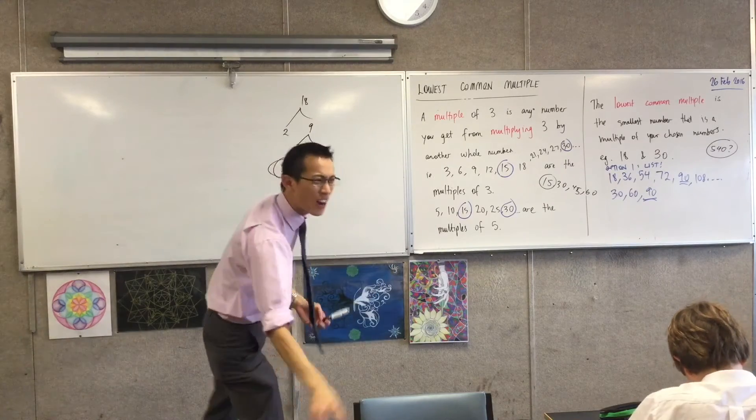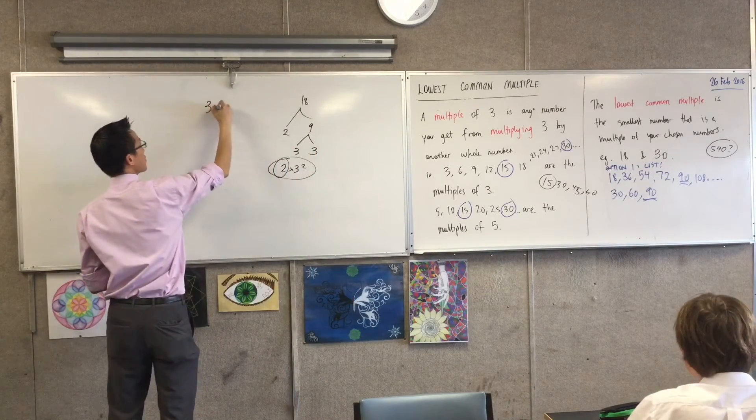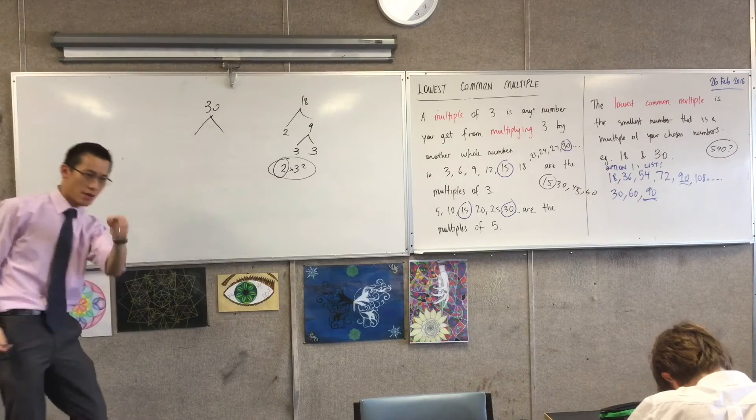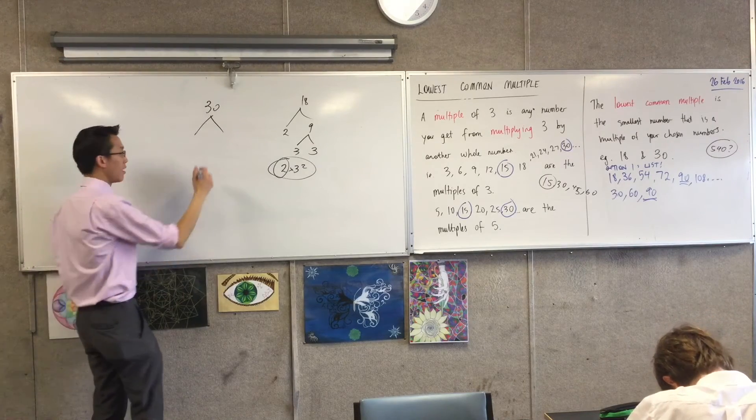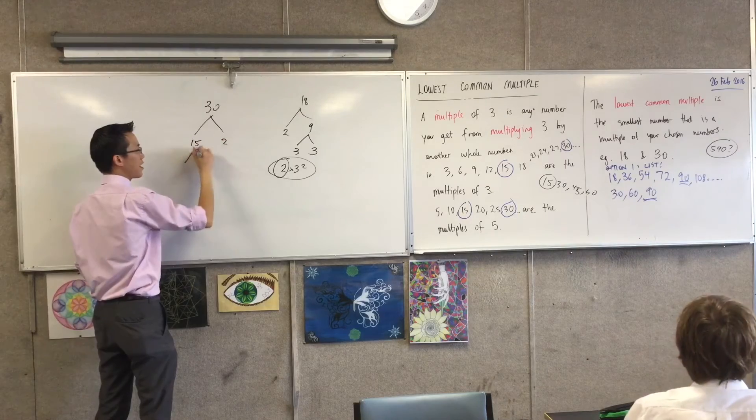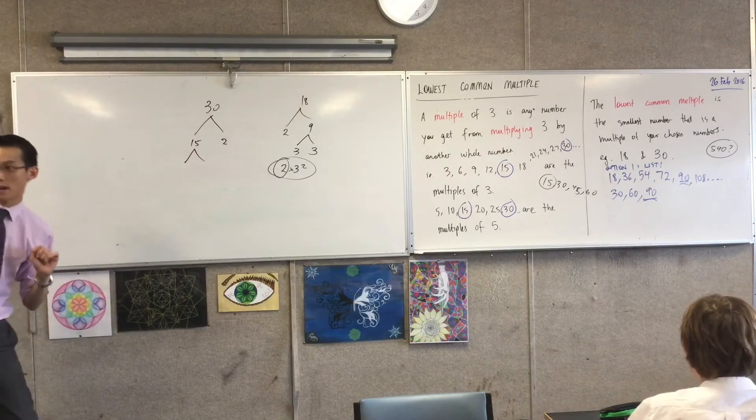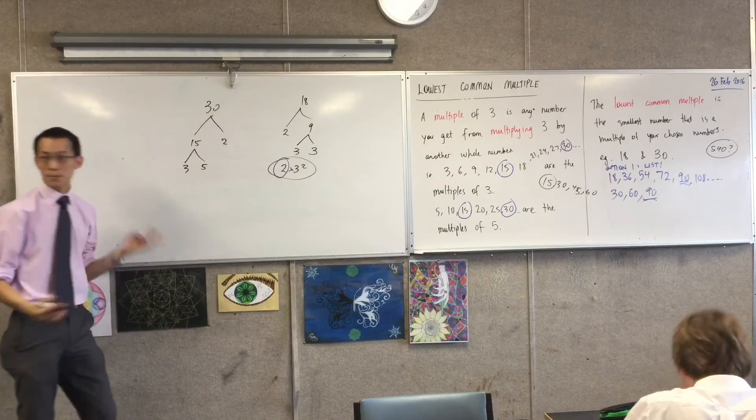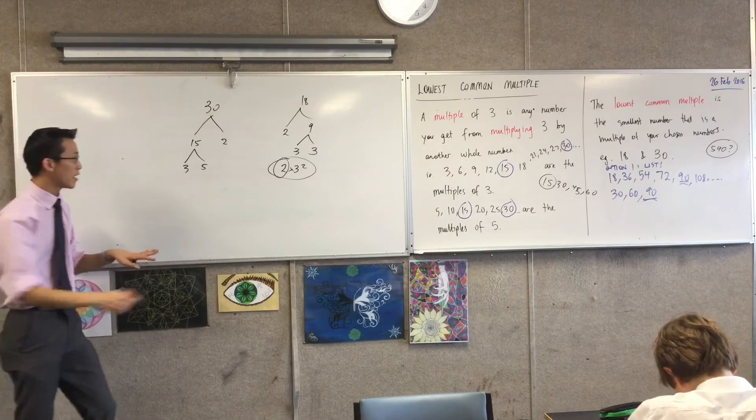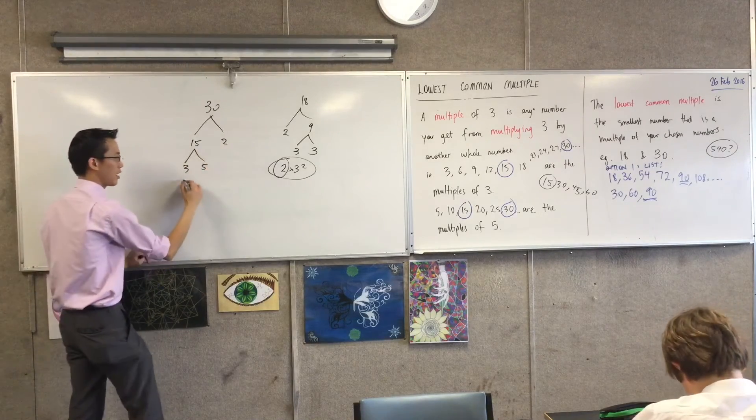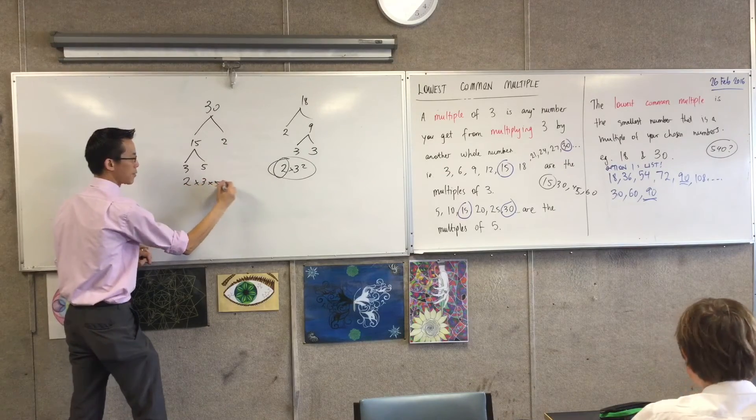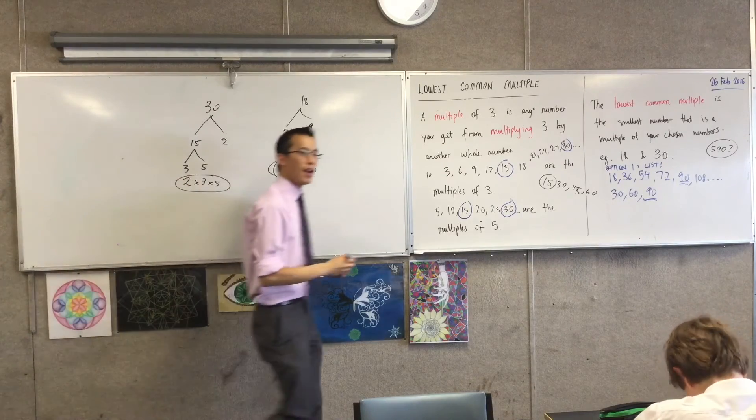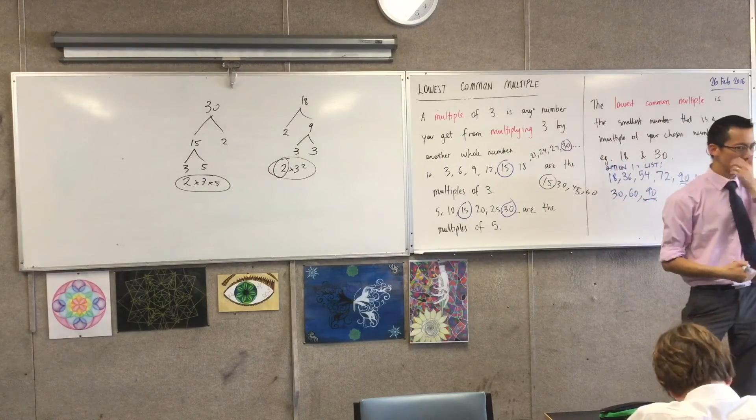Can you help me work out what the number tree for 30 is? What two numbers would you like me to put in first? Yeah, Rinesh? 15 and 2. 15 and 2. That'll be fine. How about 15? What do I do with that now? Maria? 3 and 5. 3 and 5. Very good. Okay. I'm done now, aren't I? I've got all the primes out. 1, 2, 3. Okay. So here, 2 times 3 times 5 is 30. Okay, good.